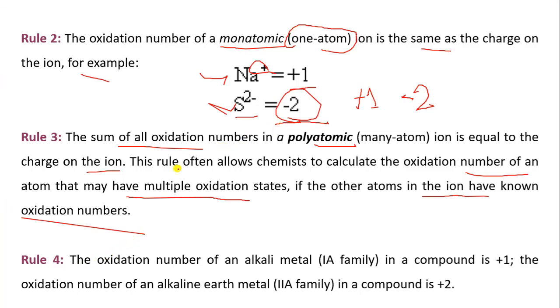Now rule 4. The oxidation number of an alkali metal, the 1A family of periodic table, in a compound is always plus 1. And the oxidation number of alkaline earth metal, the 2A family, in a compound is plus 2.